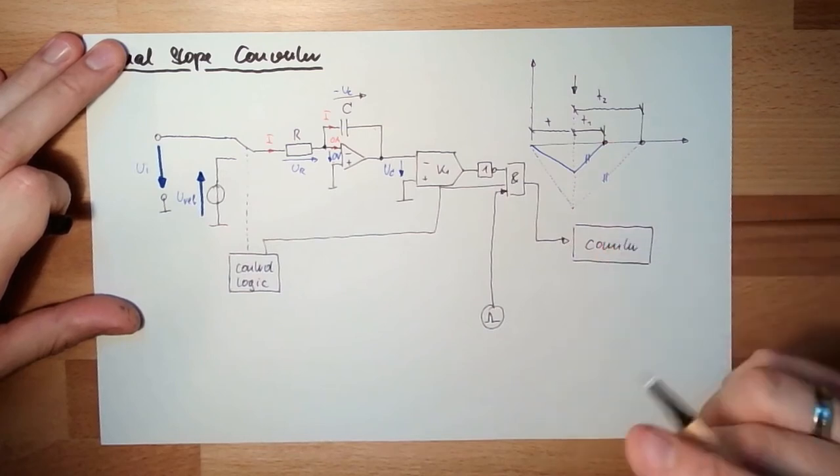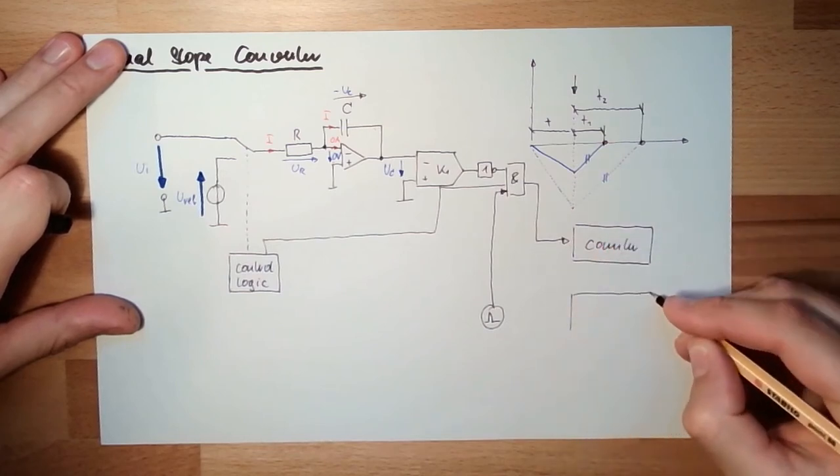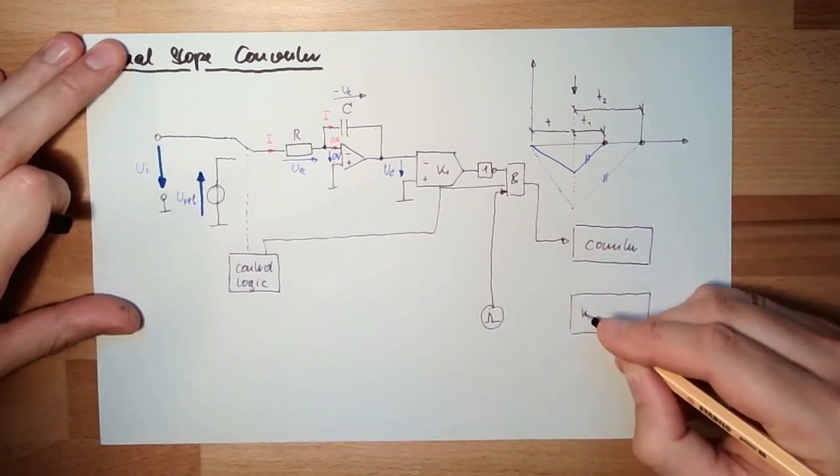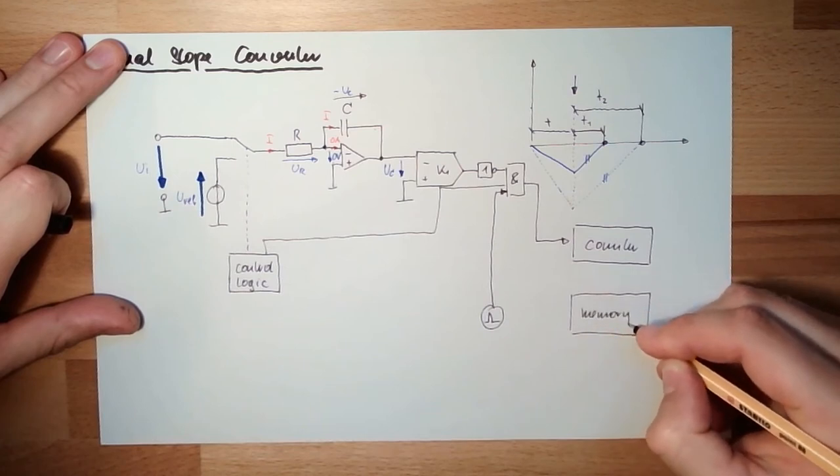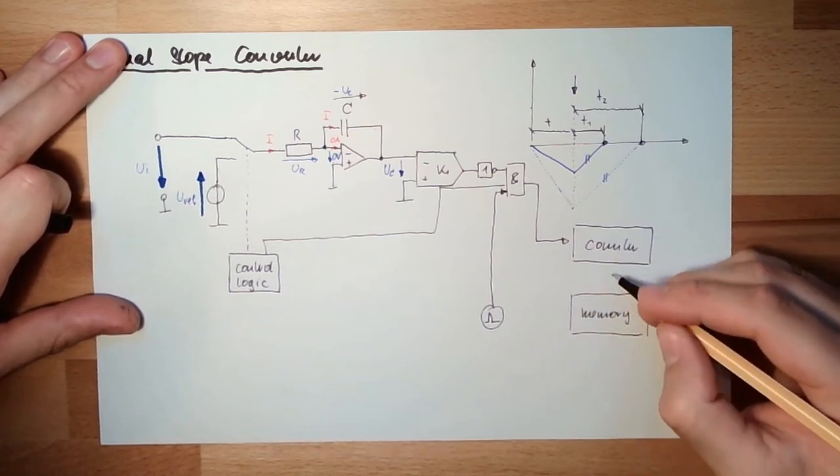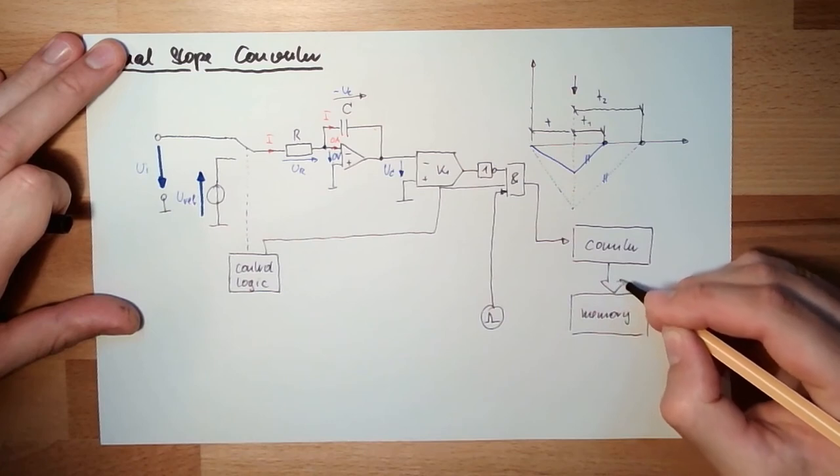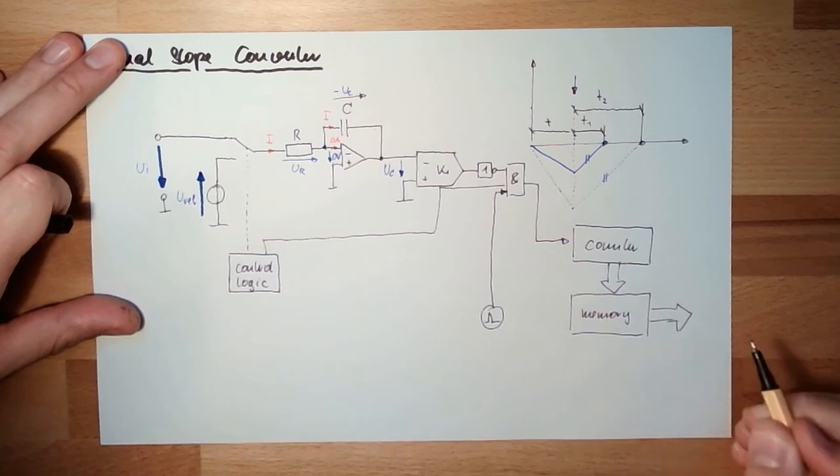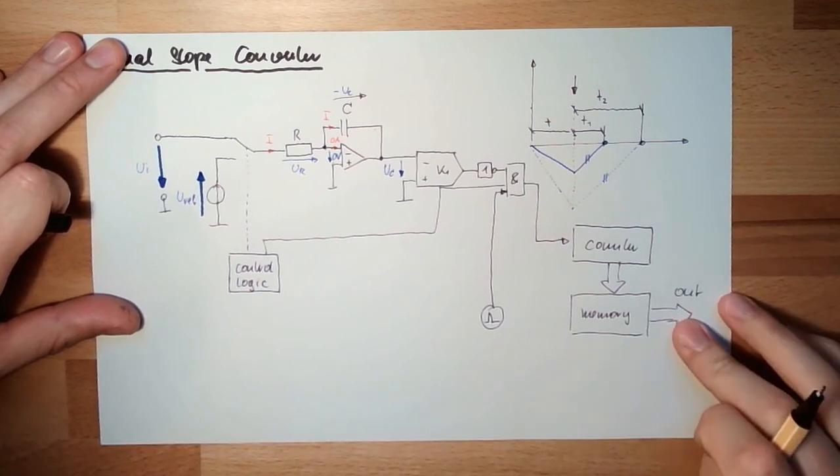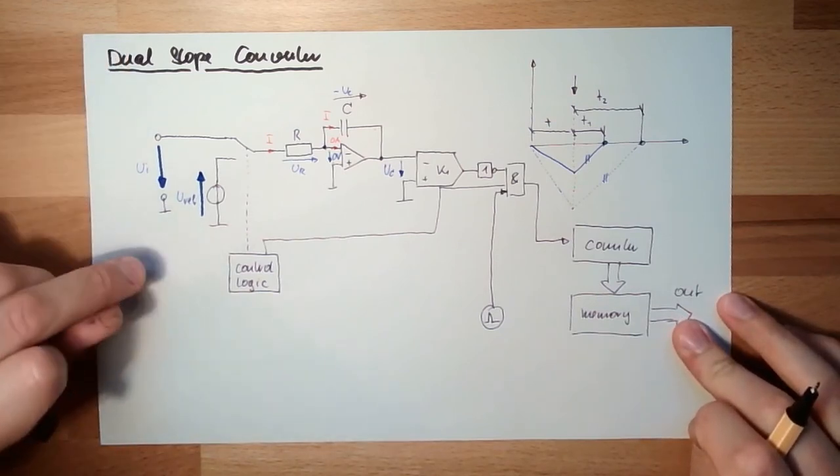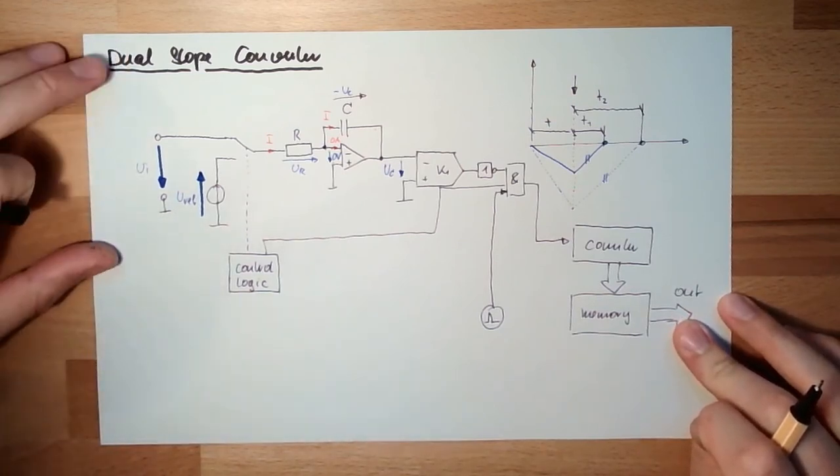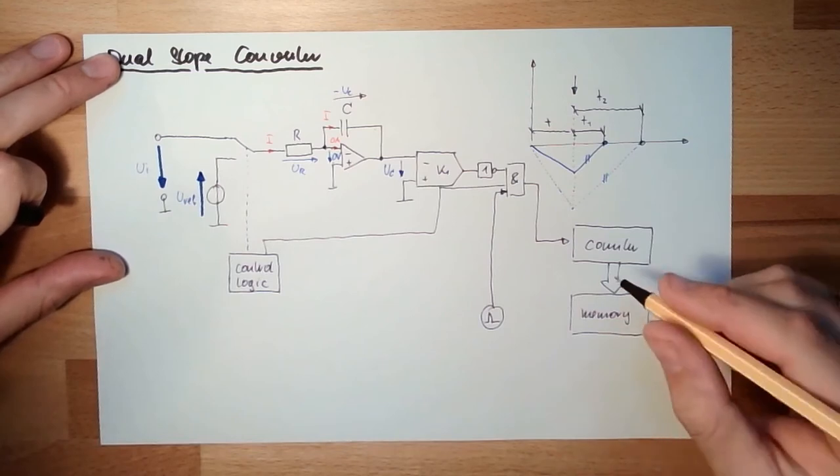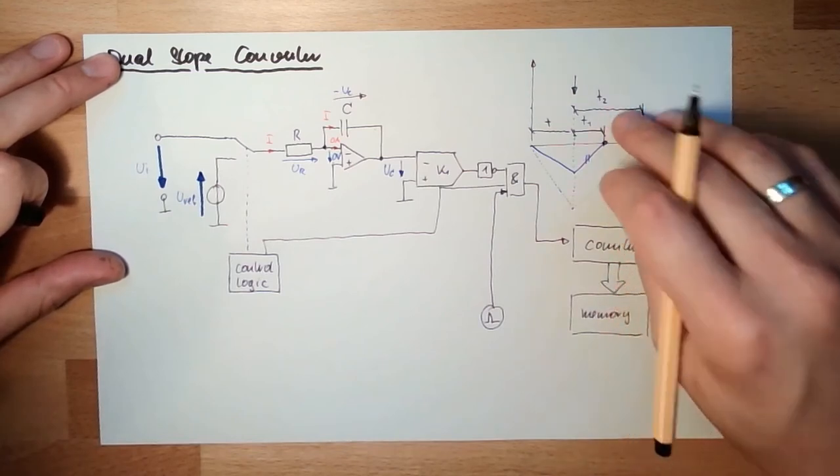So there's the counter. This is counting. There is also a memory inside, like usual. Every time the count is ready, it will transfer its data to the memory. And this is my analog digital cycle is complete. This is my output. Here I have the digitized value. And here I have my input value. And the counter is used to measure the time.